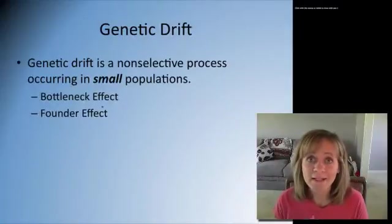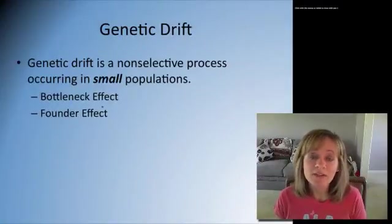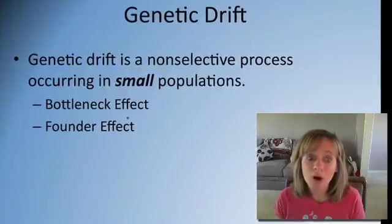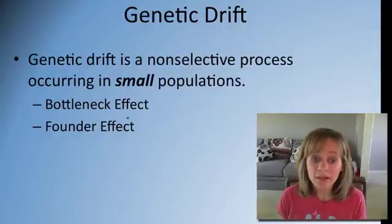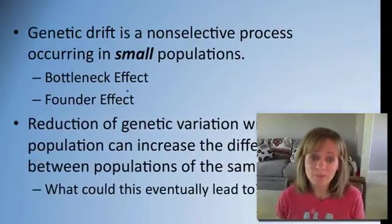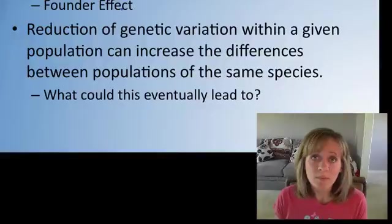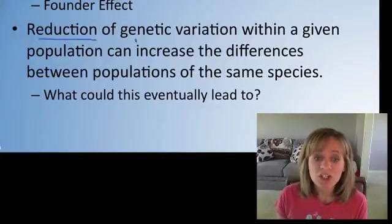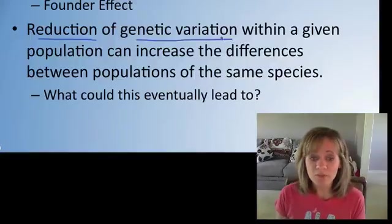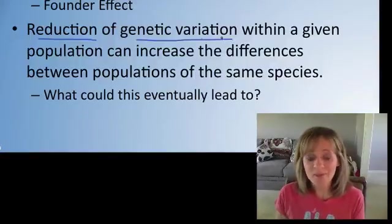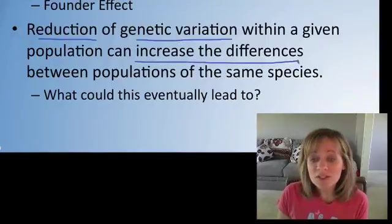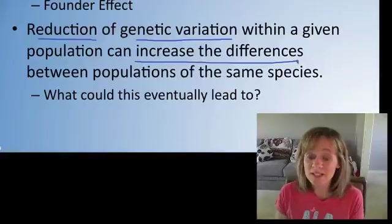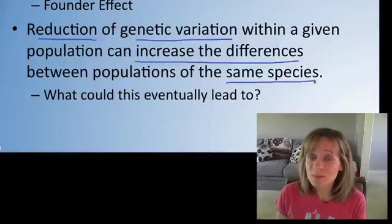The second non-adaptive mechanism is genetic drift. Now, this is especially occurring in small populations. And we have two examples or two types of genetic drift, bottleneck effect and founder effect. Both of these are characterized by a reduction in genetic variation within a population. And what happens then, because we have this reduction in variation, it actually increases those differences that do exist between populations of the same species.